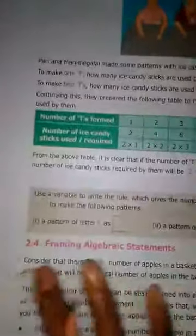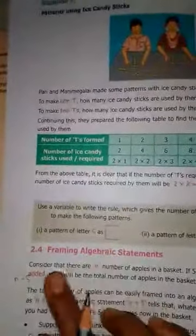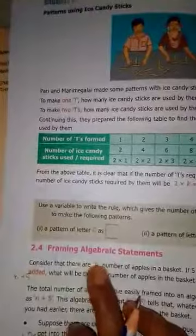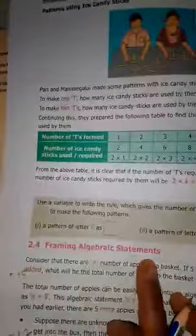That means a big sentence is given, and you can write a short form. That is an algebraic statement, which includes numbers, operations, and letters.